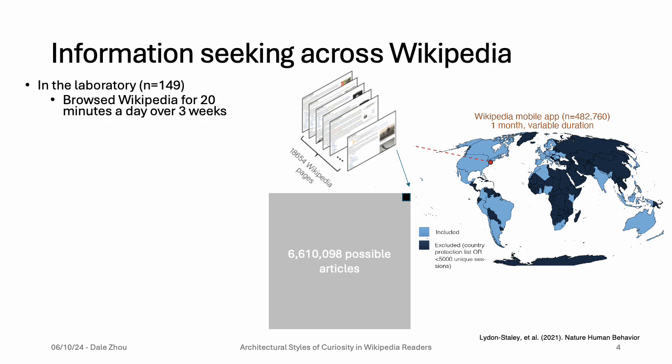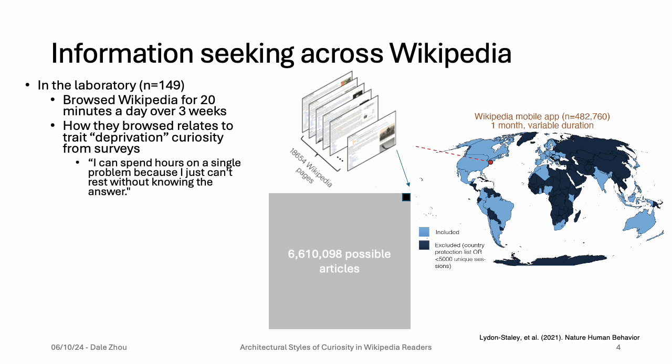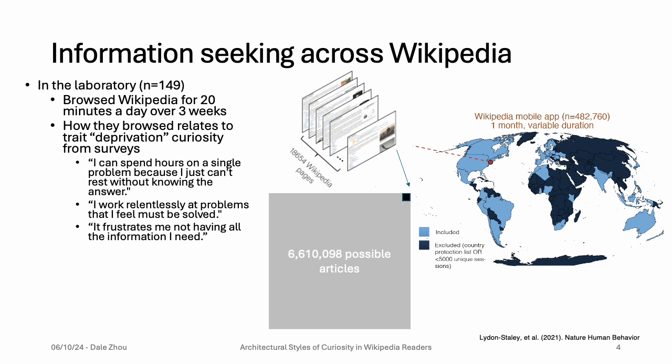We had two separate sources of data. First, from our previously published paper, we had 149 participants browse Wikipedia in the lab for 20 minutes a day over three weeks. We found that how they browse relates to a trait of curiosity concerning intolerance to uncertainty. So someone high in deprivation curiosity, or this intolerance of uncertainty, would agree with statements like: 'I can spend hours on a single problem because I just can't rest without knowing the answer,' 'I work relentlessly at problems that I feel must be solved,' and 'It frustrates me not having all the information I need.'